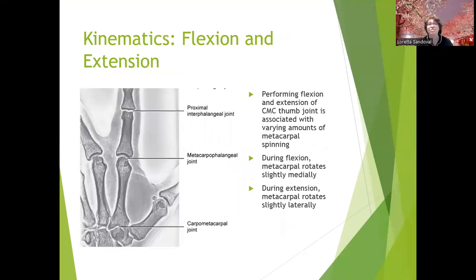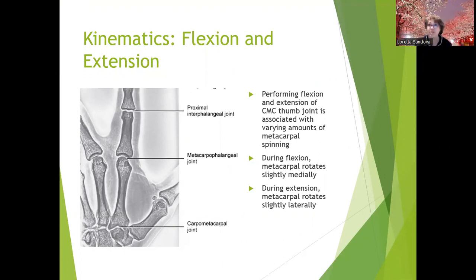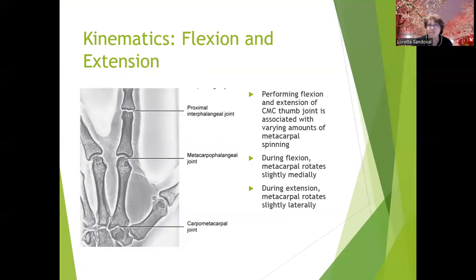With flexion and extension of the CMC thumb joint there is a little bit of metacarpal spinning — this is an accessory motion, not voluntary. There's just a little bit of spinning of the metacarpal in conjunction with regular movements: during flexion it rotates slightly medially, and during extension it rotates slightly laterally. You probably don't need to know that, but suffice it to say there's a lot of motion in the thumb.